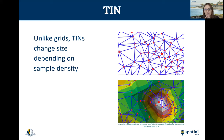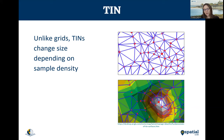Unlike grids or other kinds of rasters, TINs — or triangulated networks — change in size, so they can be very handy if you have very unevenly sampled data. If you have lots of data in some places and not very much in others, and you want to demonstrate how much data you have in a particular location, the smaller the triangle the denser the data that was used to generate it, so they can be quite useful.